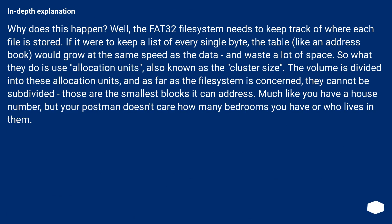Why does this happen? Well, the FAT32 file system needs to keep track of where each file is stored. If it were to keep a list of every single byte, the table — like an address book — would grow at the same speed as the data and waste a lot of space. So what they do is use allocation units, also known as the cluster size. The volume is divided into these allocation units, and as far as the file system is concerned, they cannot be subdivided — those are the smallest blocks it can address. Much like you have a house number, but your postman doesn't care how many bedrooms you have or who lives in them.